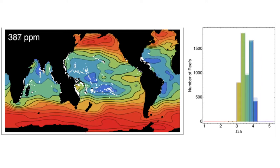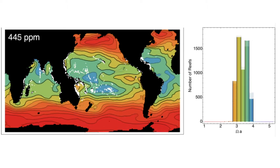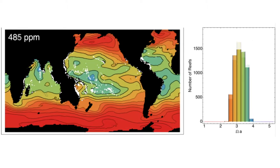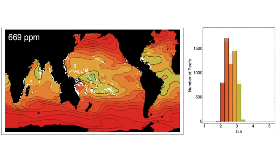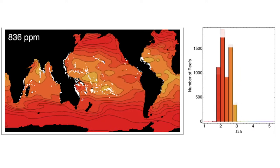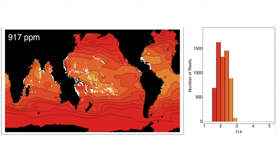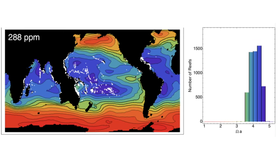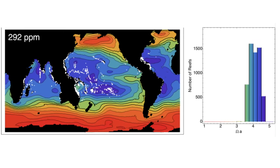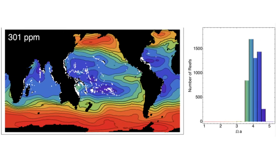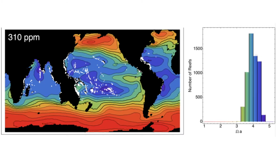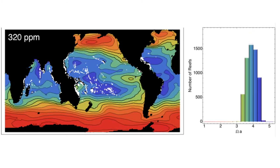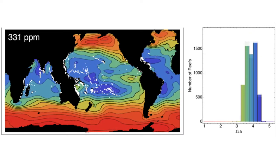In pre-industrial times, 99.9% of reefs adjacent to open ocean in the CMIP5 ensemble were located in regions with aragonite saturations of greater than 3.5. But under this business-as-usual scenario, every coral reef considered will be surrounded by water with aragonite saturation of less than 3 by the end of the 21st century.